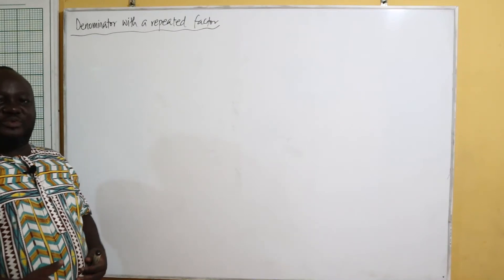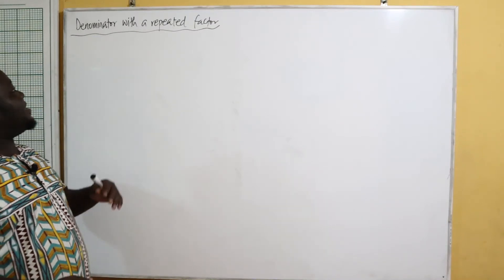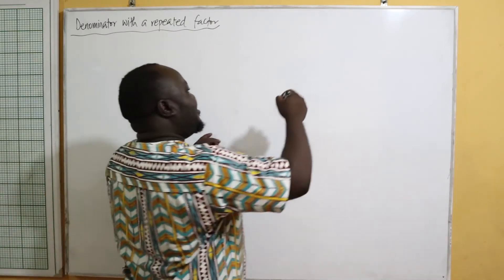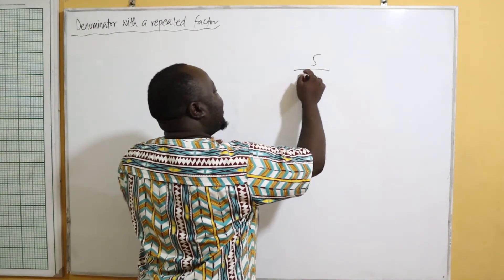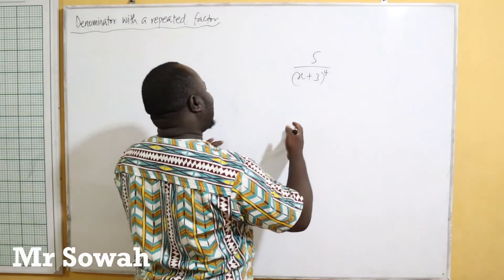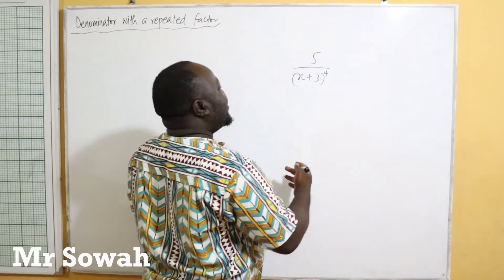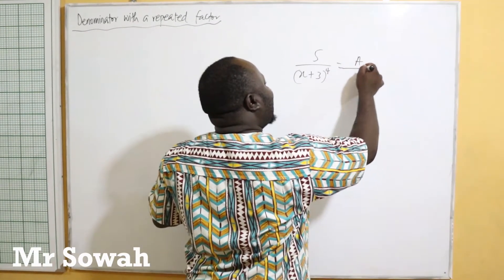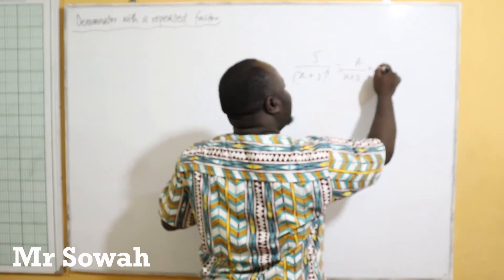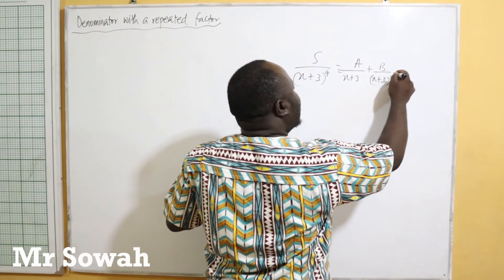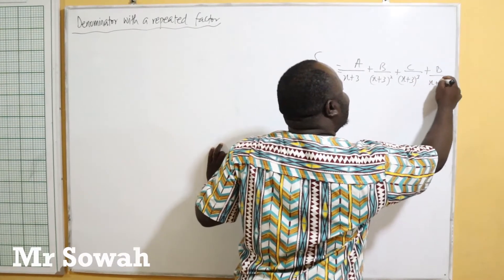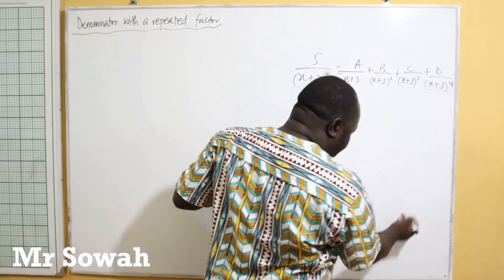We have another type of partial fraction: a denominator with a repeated factor. For example, 5 over (x+3)⁴ means (x+3) is repeated four times. You can express this as partial fractions: A over (x+3), plus B over (x+3)², plus C over (x+3)³, plus D over (x+3)⁴. The factors are repeated, so each power gets its own term.